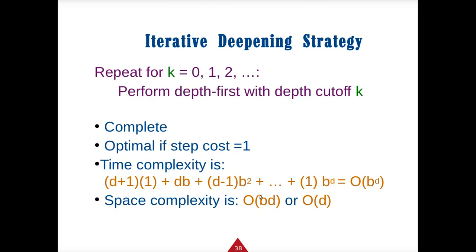The iterative deepening strategy — which you'll implement for the assignment — keeps increasing K. This will find a solution. The space complexity becomes O(B*D) instead of O(B*M), giving slightly better performance than a generic depth-first strategy.